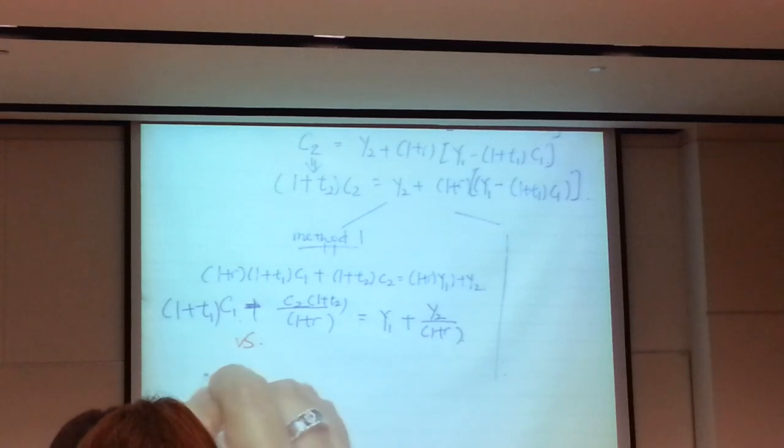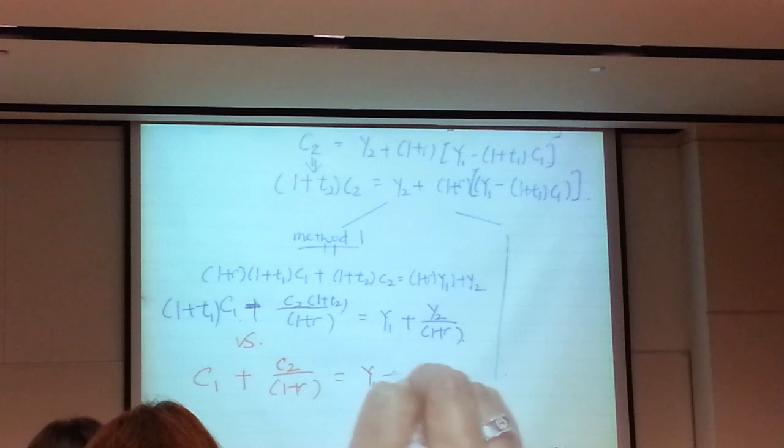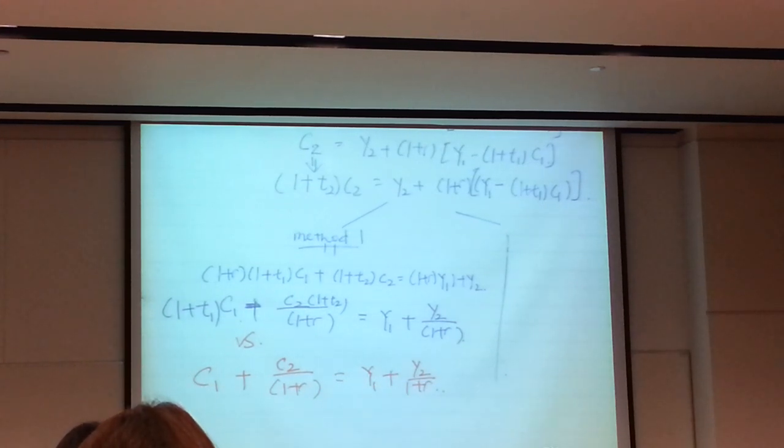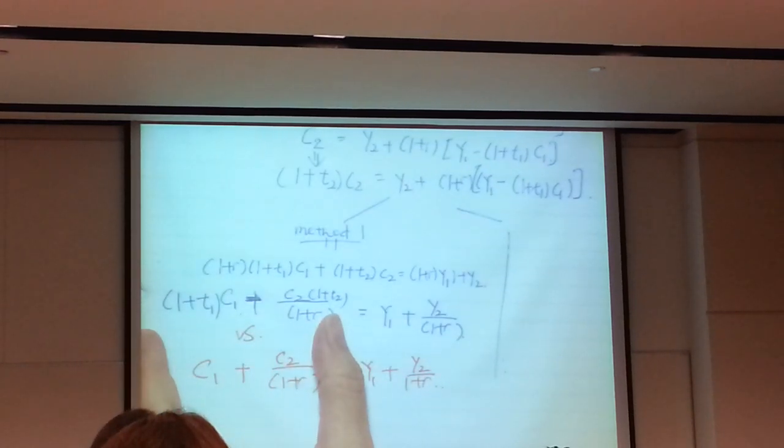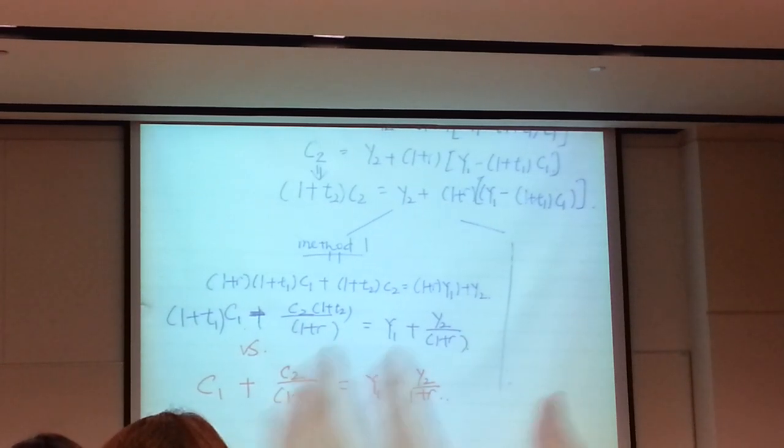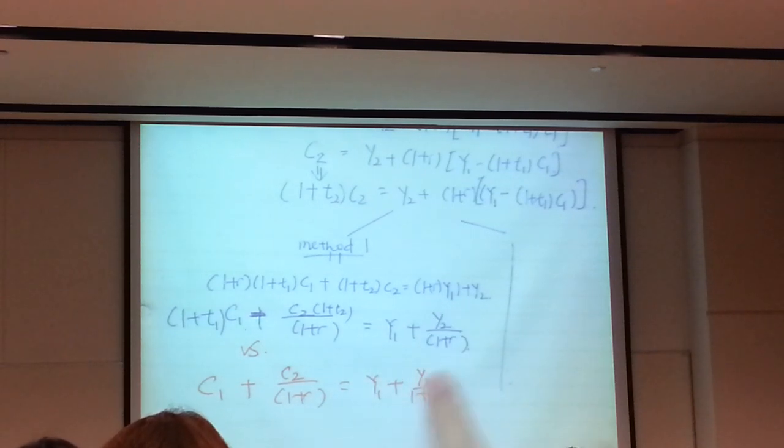So you look at it very carefully. You are going to reach your IBC already. There are two methods. There are two ways to express this equation. One way is to group the C1, C2 on one side. So if I do method 1, I will bring the C1 to the left. So be careful, if I bring this to the left, I will get 1 plus R, 1 plus T1, C1 plus 1 plus T2, C2. And this is equal to the remaining 1 plus R, Y1 plus Y2.